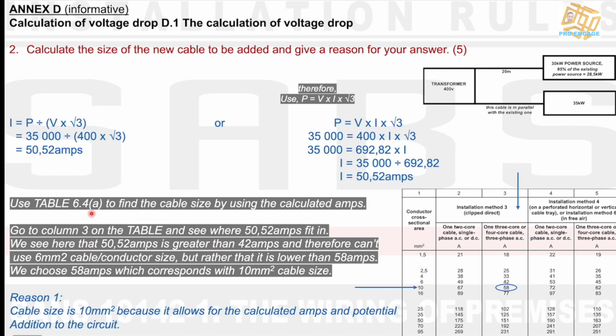Then I say use the table 6.4A to find the cable size by using the calculated amps. I use that calculated amps and I then line that up. I say go to column 3 on the table and see where the 50.52 fits in. It is definitely more than 42 amps for a 3 phase cable. I cannot use that value. The next value is 58. It falls within that range. I then line that up with my cable size and I come to a cable size of 10 mm squared cable. And this is a reason why I can use 10 mm squared cable for my second supply cable.